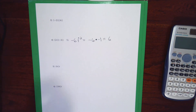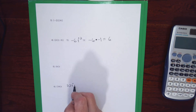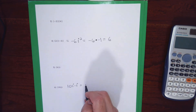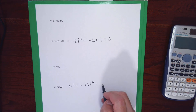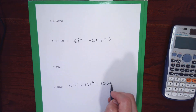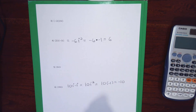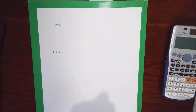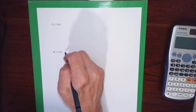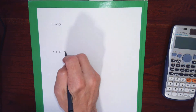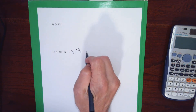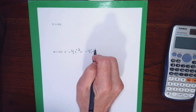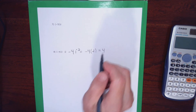Problem 6: 10i times i equals 10i². Since i² is negative 1, problem 6 reduces to negative 10. Problem 7: negative 4i times i simplifies to negative 4i², and since i² equals negative 1, negative 4i² equals positive 4.